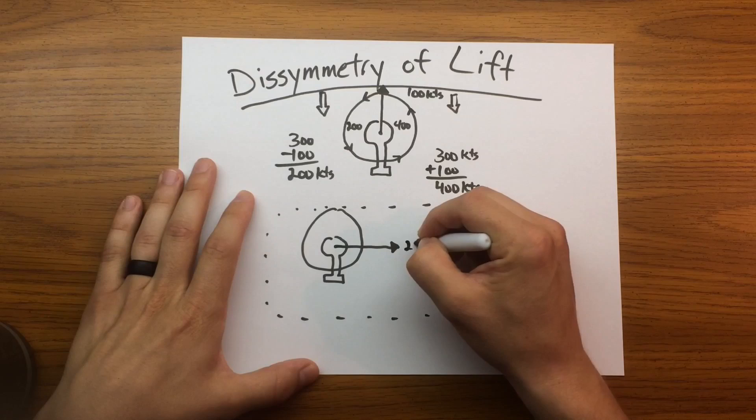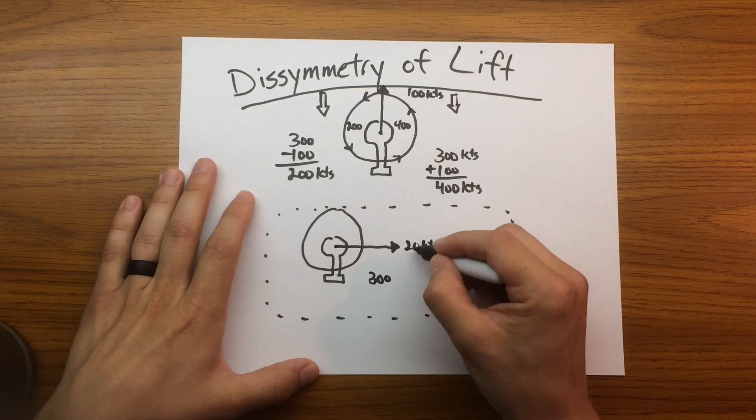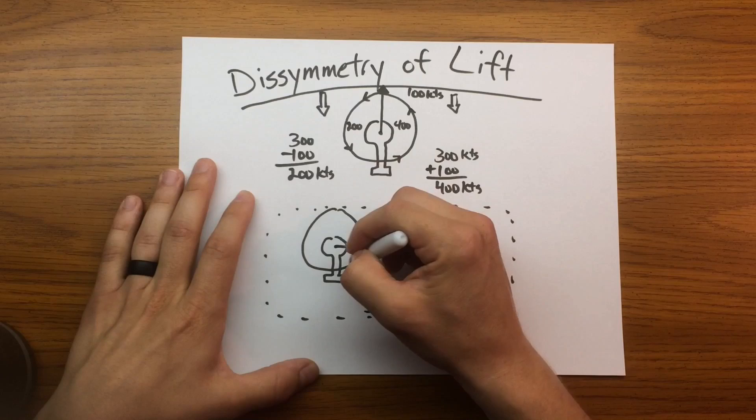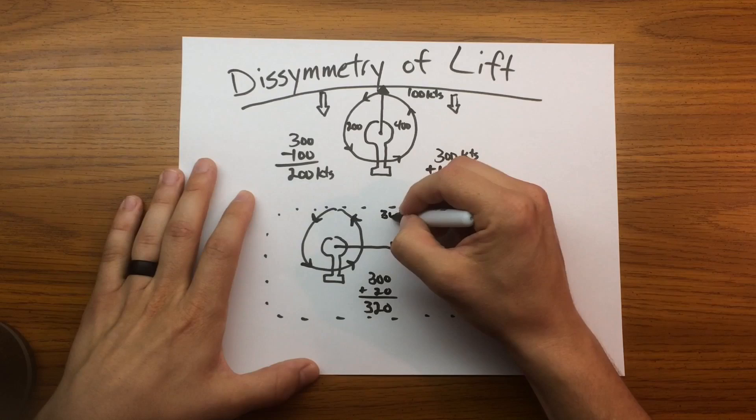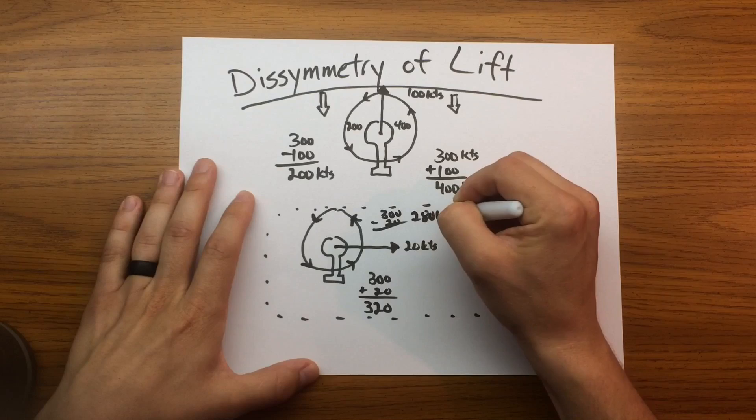Say we're sliding to the right, 20 knots. So we still have the rotational speed of 300, and it's advancing into the 20 knots for 320 knots of airspeed on the advancing side. And the retreating side, doing the reverse, 300 minus the 20, for 280 knots. So here we see on the rear half of the rotor disc, it's producing more lift than that retreating side.